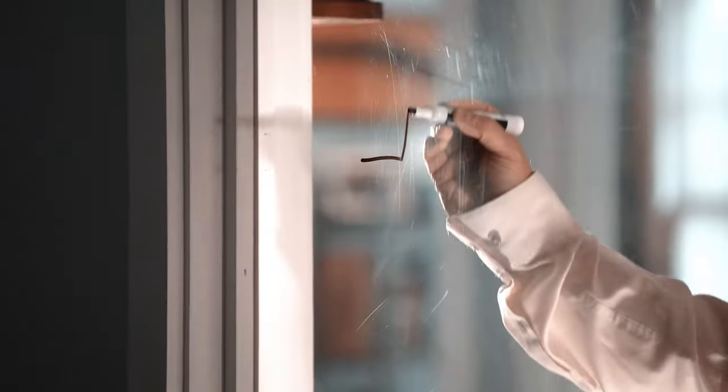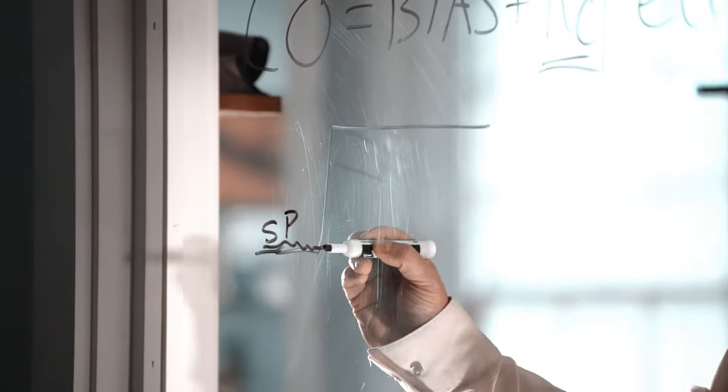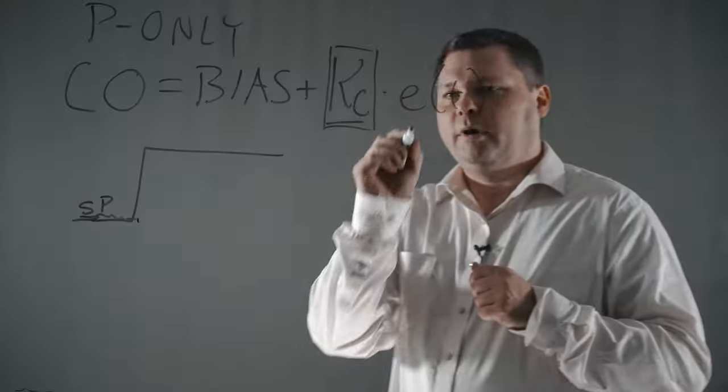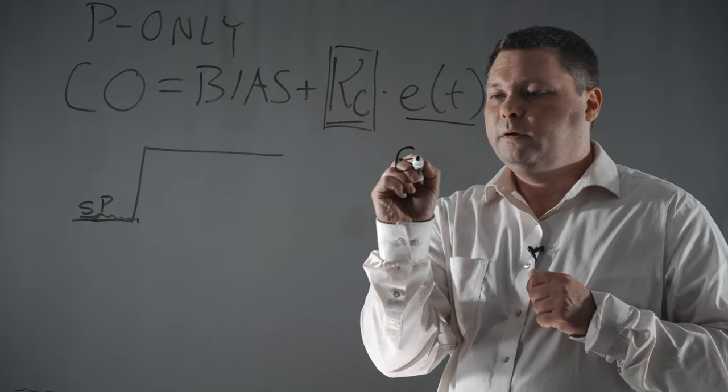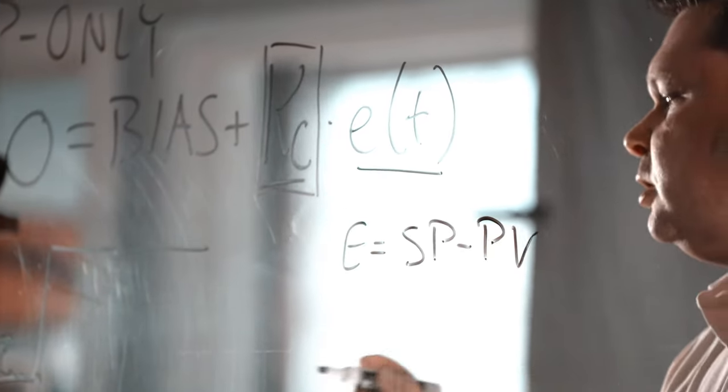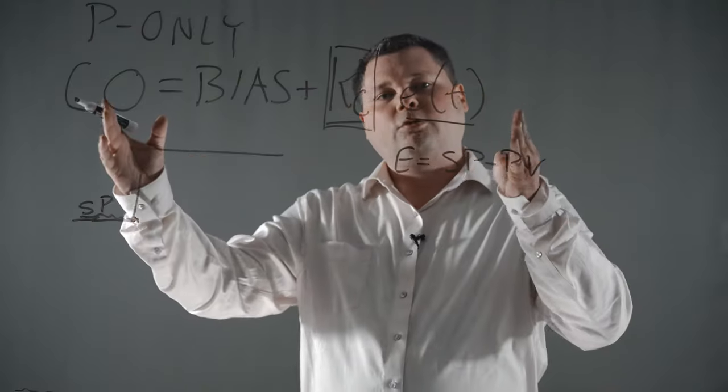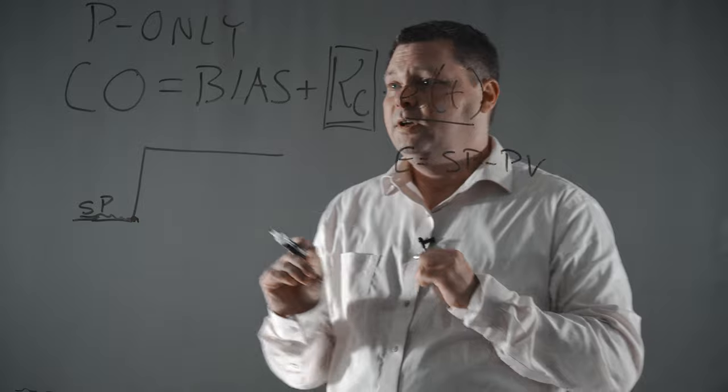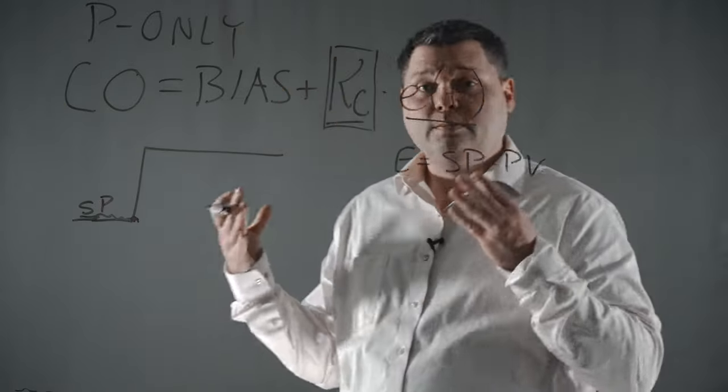So if we start with a setpoint change, so this is our setpoint, and our process variable starts down here, we have essentially no error. This error term, this portion of our equation, is error is equal to the setpoint minus the measurement. So at this moment right here, we have no error. So if you think about what this equation represents, when we have no error, this term over here on the right drops to nothing. And all we're left with is the controller output is equal to the bias value, or the starting position.